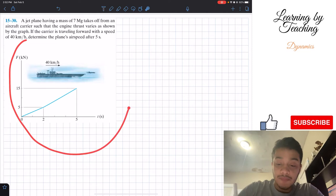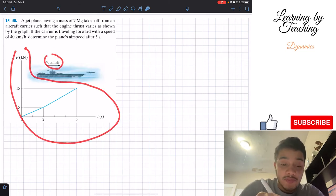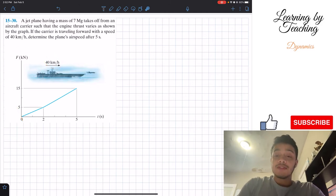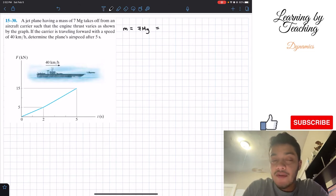So what are we giving in here? We're giving two things. First, we have our plane that initially was traveling at 40 kilometers per hour, and we're also giving the force versus time graph. As I always like to do in this problem, let's first write out our givens. For givens, the first thing they're giving me is that the mass is equal to 7 megagrams. We can convert these megagrams into kilograms, which is basically the more standard unit, as 7,000 kilograms.